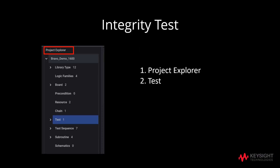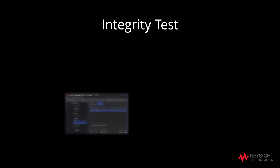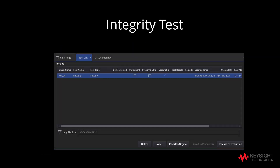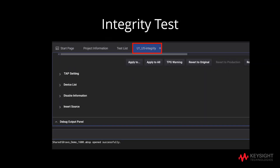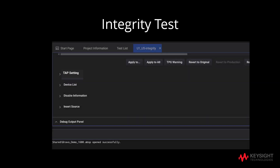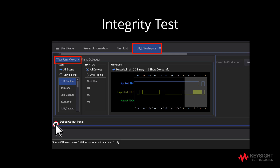We will conduct the integrity test by clicking on project explorer, followed by double clicking on test. After running the test by clicking on run, proceed with double clicking on U1_U5 integrity under the test list. Following that, click on tap setting. The tap setting will review boundary scan tap controller nodes. After running U1_U5 integrity, click on the debug output panel to view the graphical waveform of TDO.